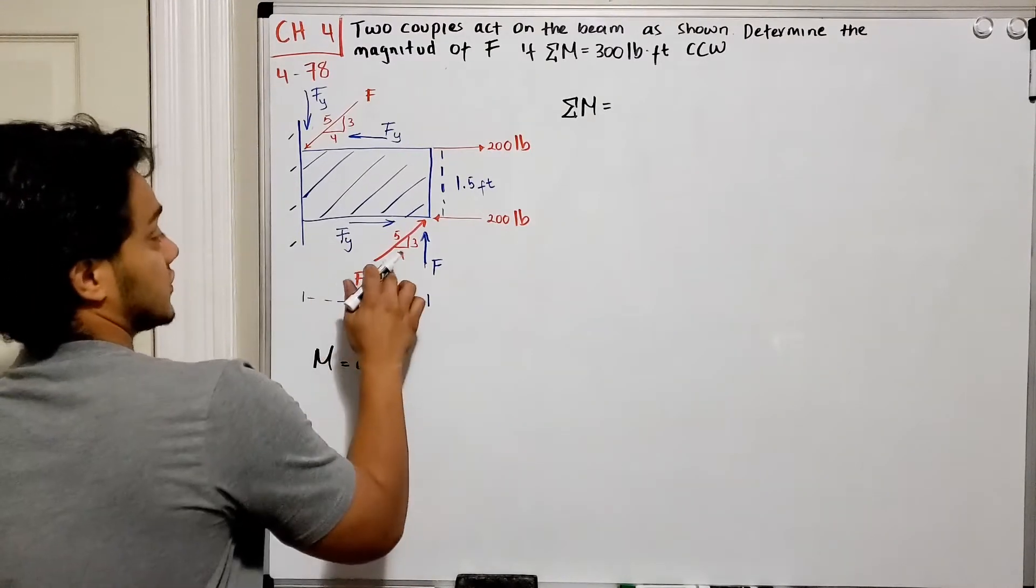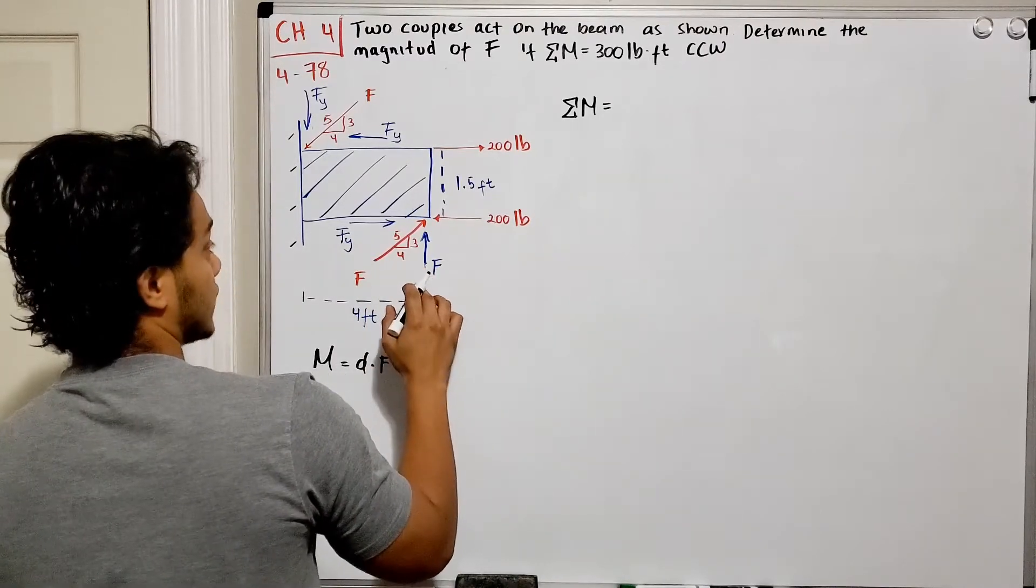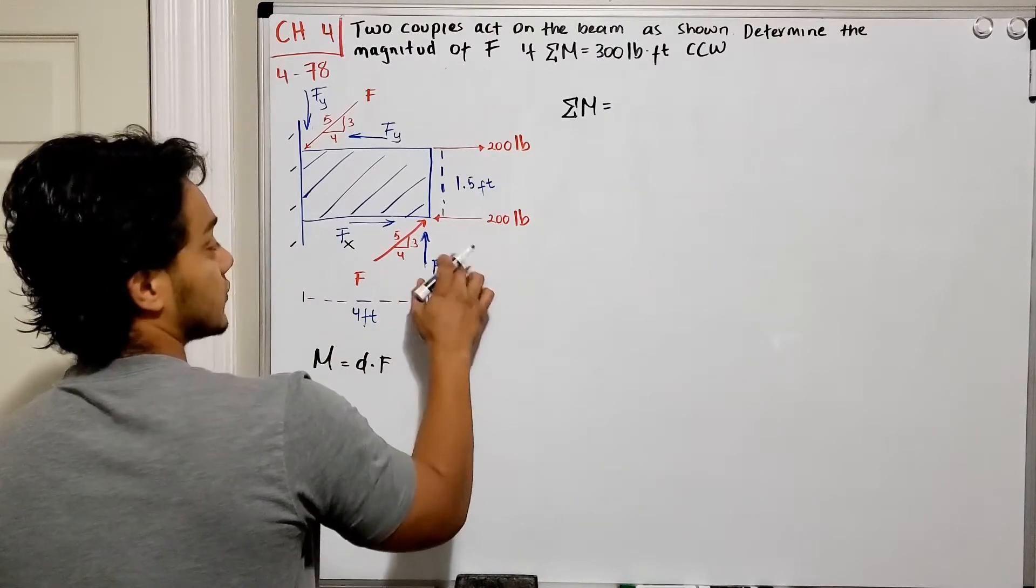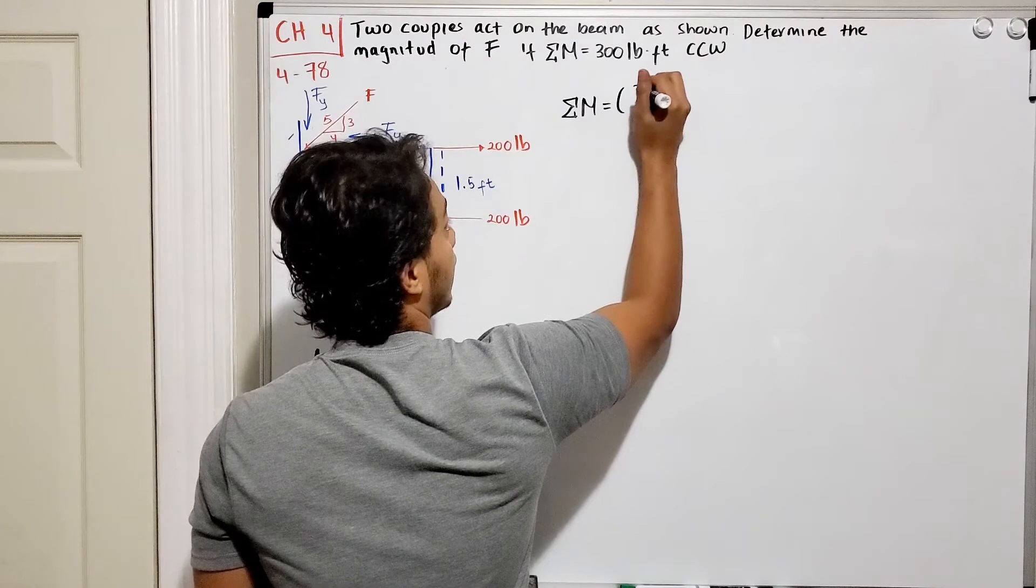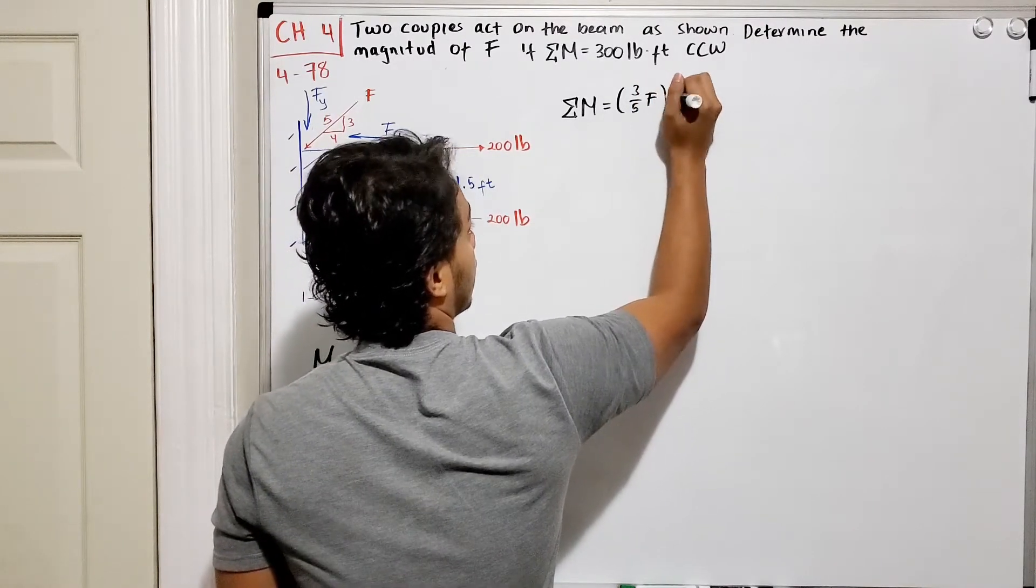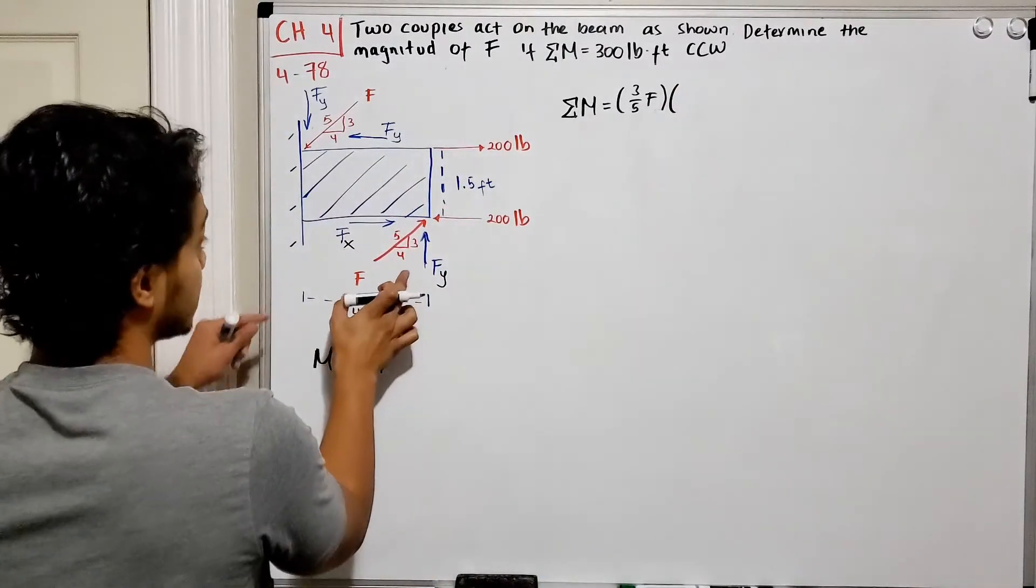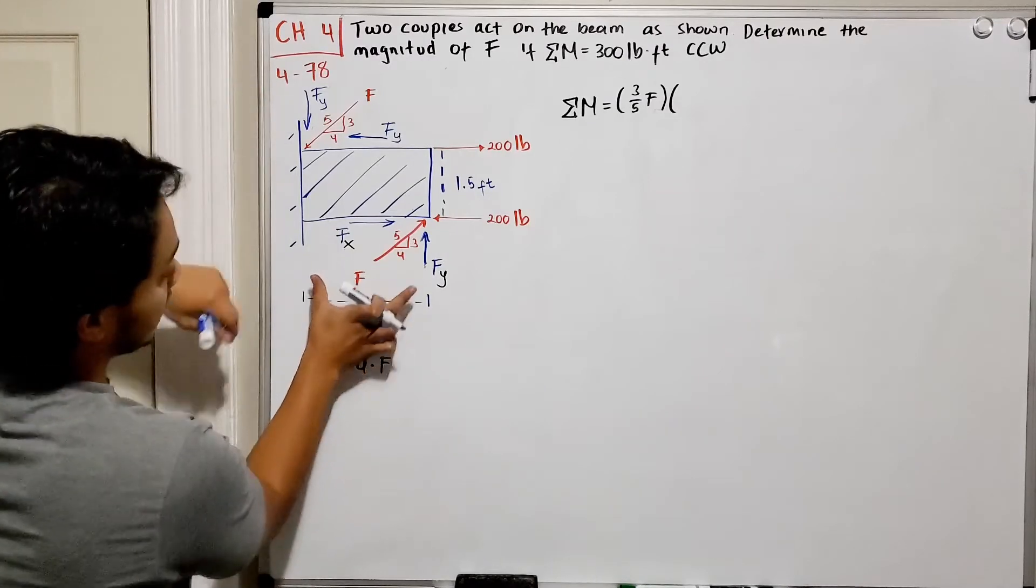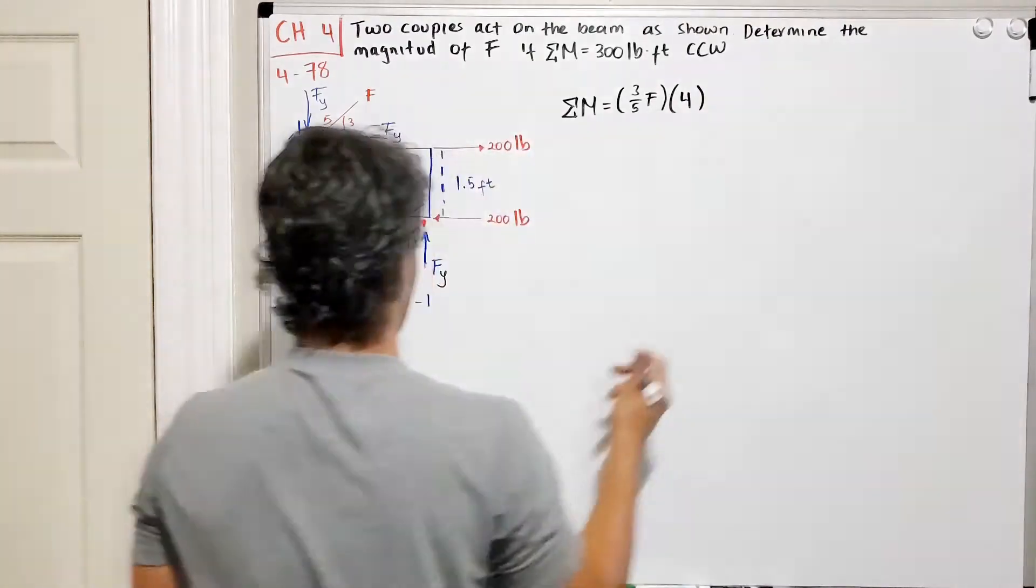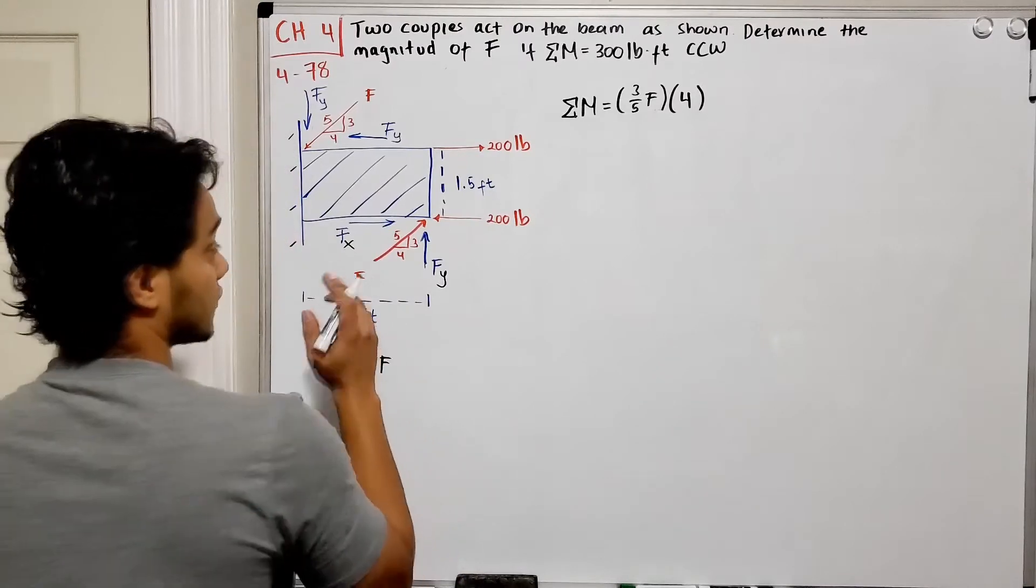So since we're given that this is a 3-4-5 triangle, we know that if we start with our F_y, this is the x, this is my one. We'll start with F_y, it's three out of five, so we got three out of five of my force for F_y multiplied by the difference in the distance between the two F_y, which is given by this four feet. So multiply by four. Now what is the direction? So it's going like this, so it's going counterclockwise, so I'm going to leave it positive.